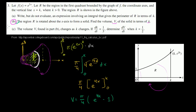That is part b. Now part c: the volume v found in part b changes as k changes. If dk/dt equals one third, determine the derivative of v with respect to t when k equals one half. This is straight from the chain rule: dv/dt equals dv/dk times dk/dt.